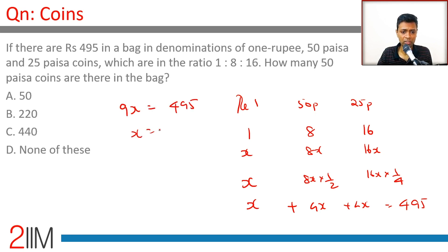x is 495/9 which is 55. So there are 55 one-rupee coins. How many 50p coins will there be? 8 times 55, which is 55 into 8, equals 110 into 4, which is 440.